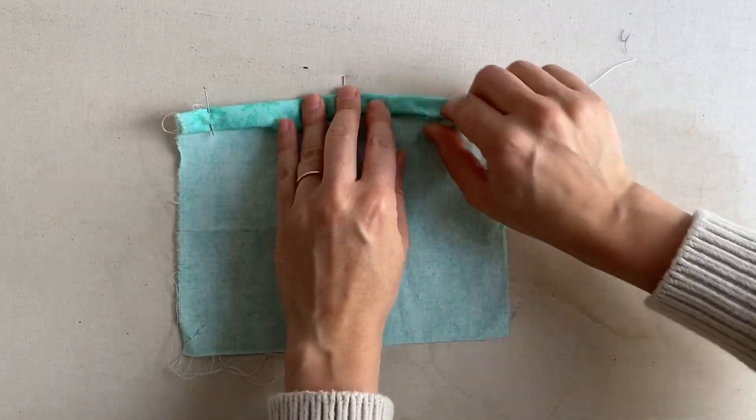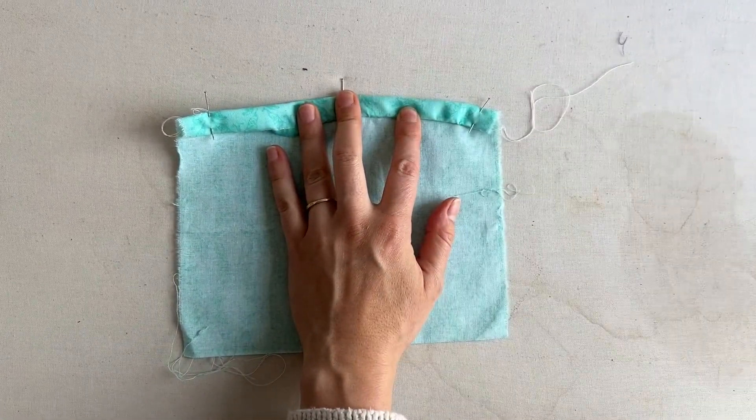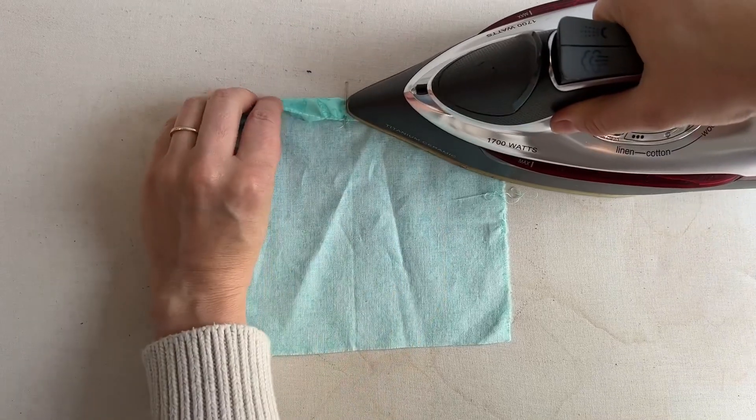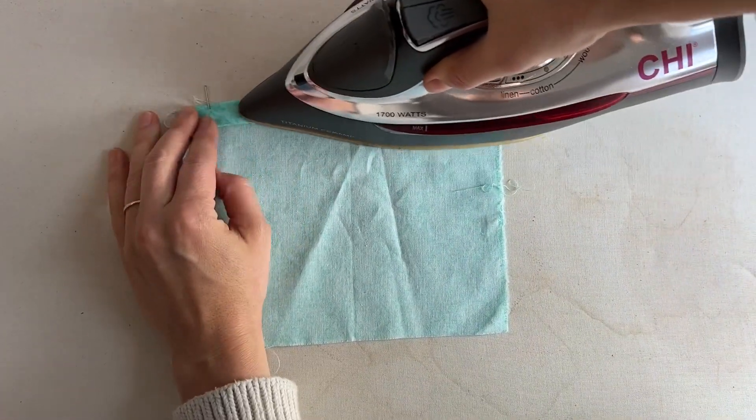Next, you can tug on the basting stitch if necessary in order to make it so that the curve fits nicely into your sample or onto your hem.